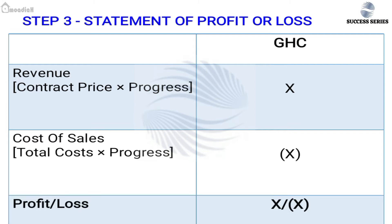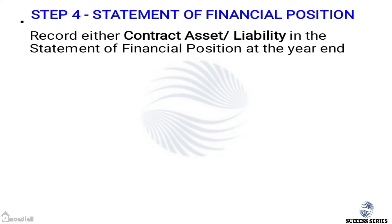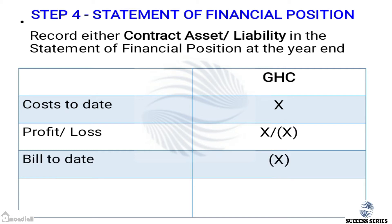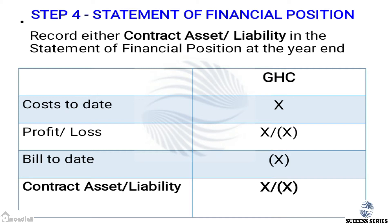Step four deals with preparation of the statement of financial position. We are required to record either a contract asset or liability at year end. The formula is: cost to date, plus profit or loss, minus billings to date. This gives us our contract asset or liability.